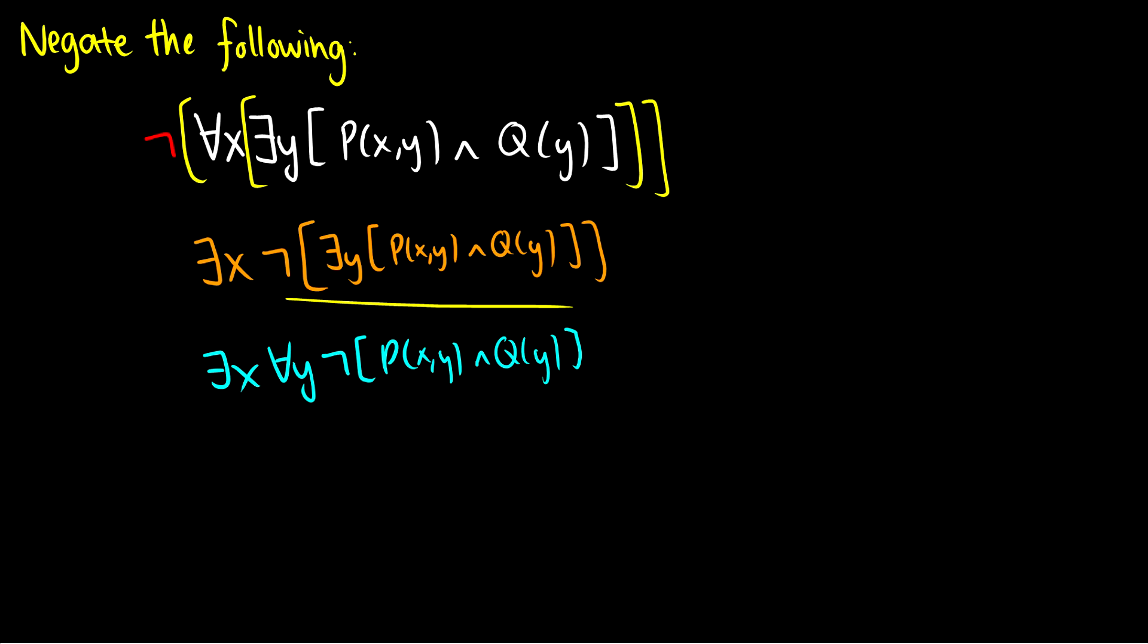And now all we do is we just do De Morgan's Law, and we finish it up. So exist x, all y, and then De Morgan's Law would be not P(x,y), or not Q(y). So that is negating. And whenever you do negation, just take it step by step like that. Negate one quantifier at a time, flip the quantifier, shove the negation through, flip the quantifier, shove the negation through, and then do De Morgan's on the inside propositions.